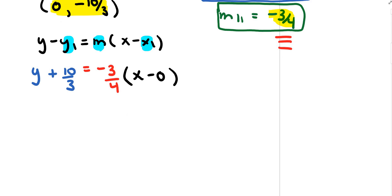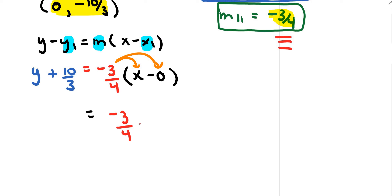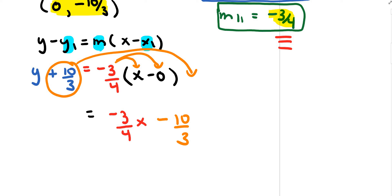Now I need to change this into standard form. Distributing, I get negative 3 over 4x, and negative 3 over 4 times 0 is just 0. Then I bring the positive 10 thirds over, which becomes negative 10 over 3, with y on the left-hand side.